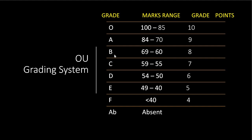If you got marks between 55 to 59, the grade will be C with grade points of 7. Between 50 to 54, the grade will be D with grade points of 6. Between 40 to 49, the grade will be E with grade points of 5. Grade F means fail — if you got less than 40 marks, you are considered as failed and awarded grade points of 4. AB means absent — you did not attend that exam.